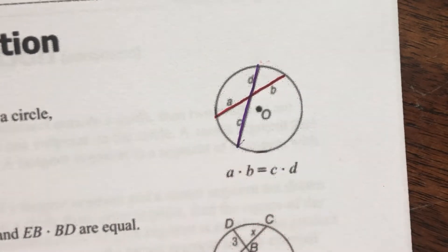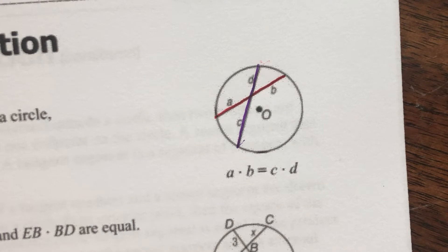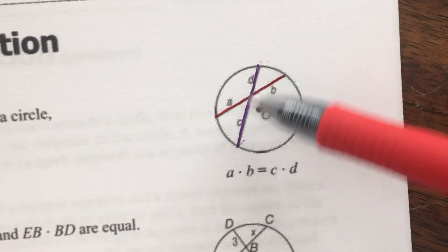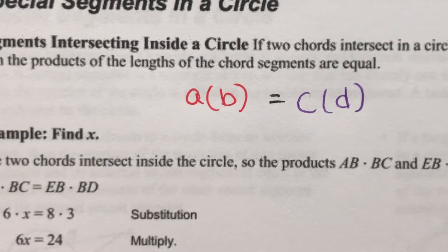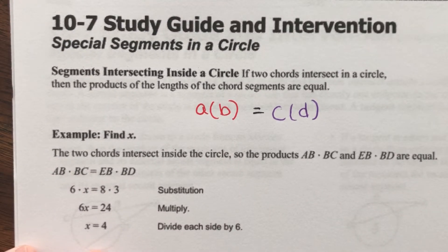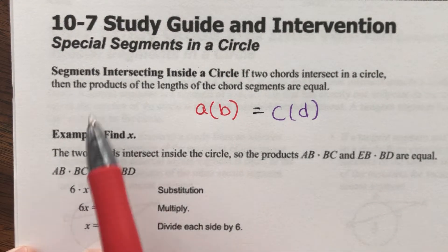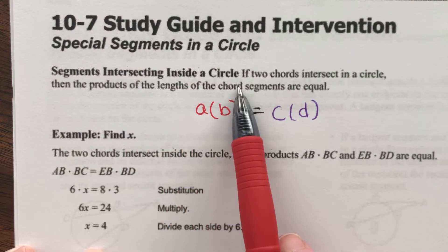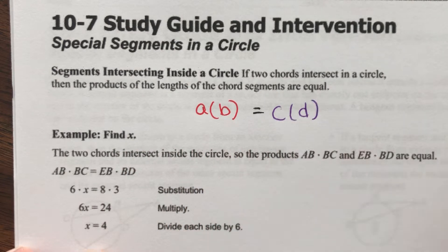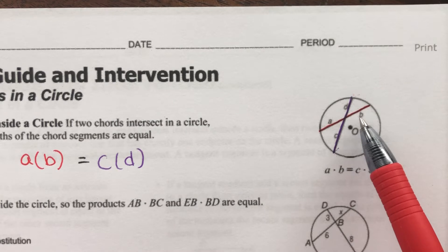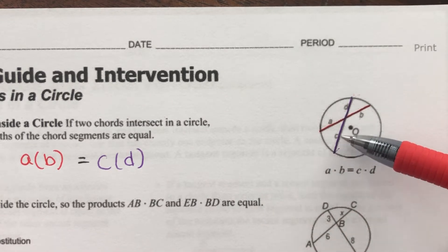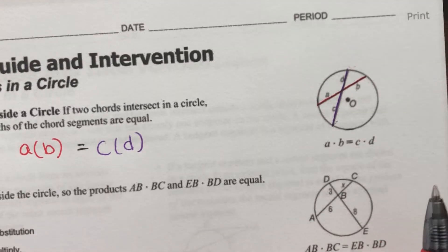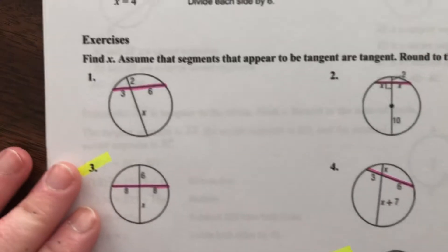So when we multiply these two together, we should get the same answer as when we multiply these two segments together. Okay, so basically the rule is, if two chords intersect in a circle, then the products of the lengths of the chord segments are equal. So here, A times B should be equal to C times D. That's it. That's the entire first part of this lesson, this first page. So we're gonna do a few examples here.